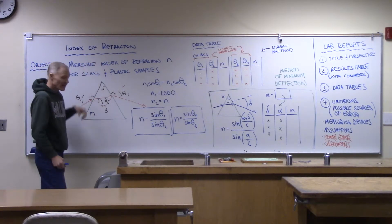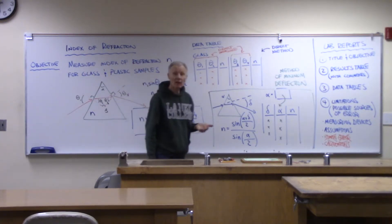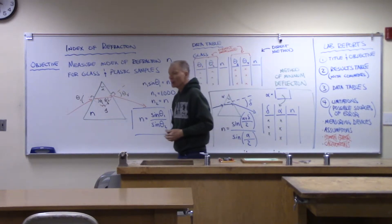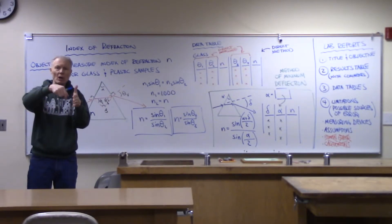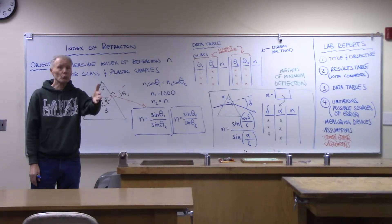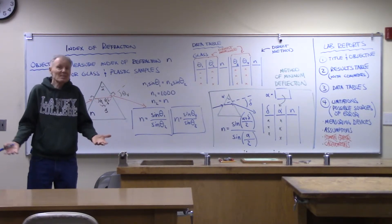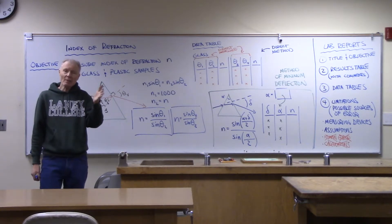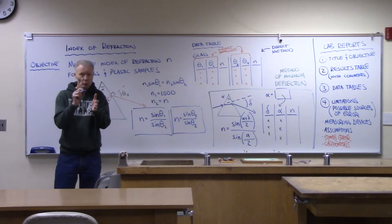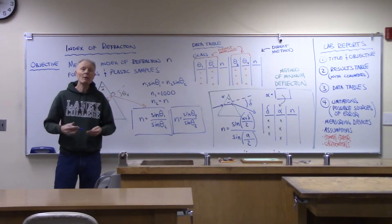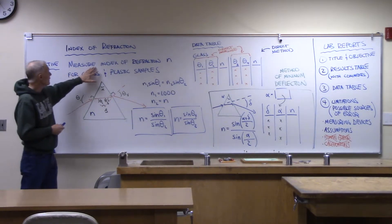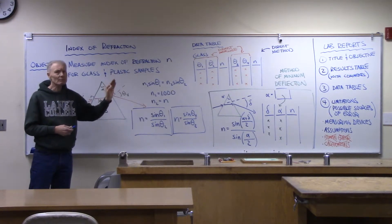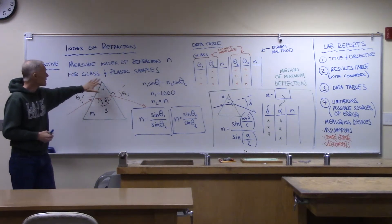Our first lab is looking at index of refraction. We talked about that in class today — when light travels through different materials, it's kind of a relay race of photons. The path of the light traveling through is not at c; it's not the same speed as in a vacuum. Photons of light are interacting with the molecules along the way, and that interaction process slows them down. Our objective for the day is to measure the index of refraction, little n, for some glass and plastic samples.